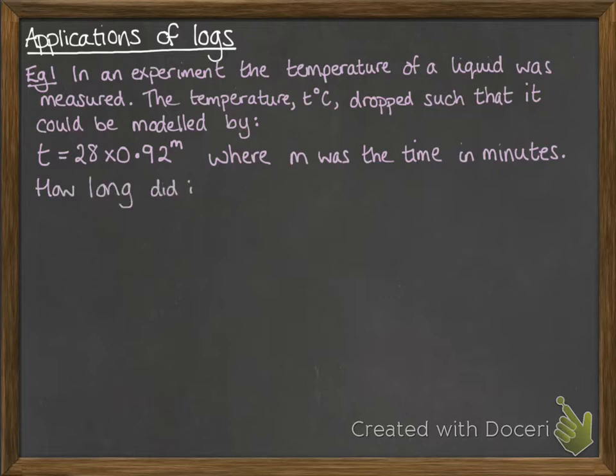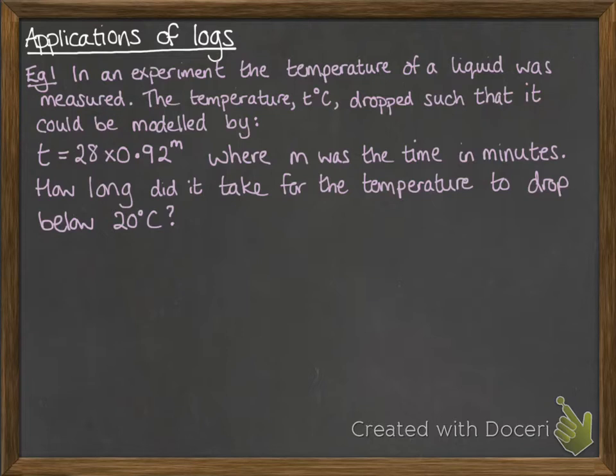The question is how long would it take for the temperature to drop below 20 degrees C? We need to have this equation being less than 20. We want to know what value of M would make that happen.